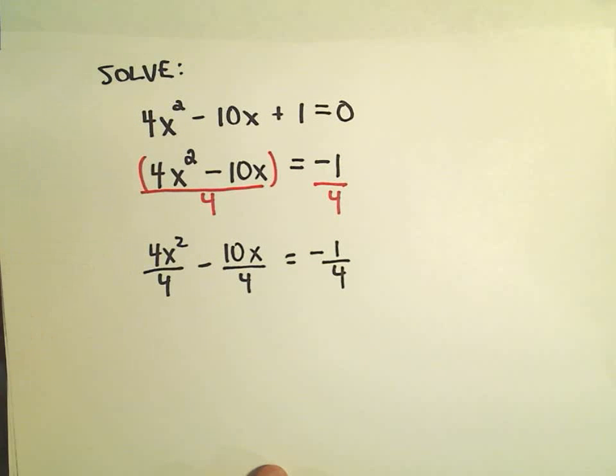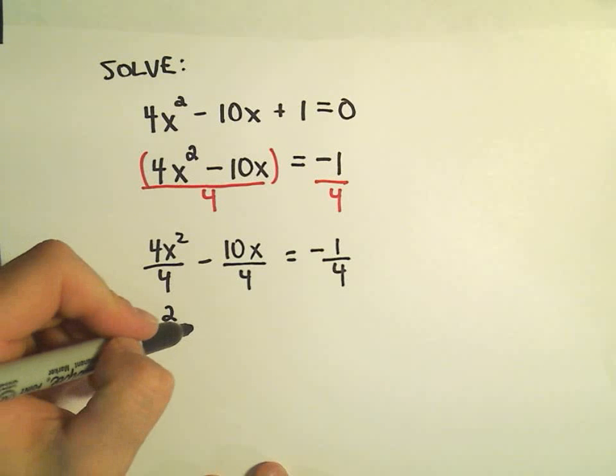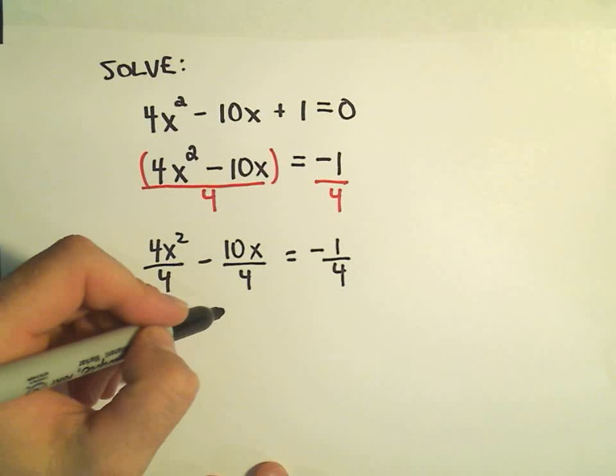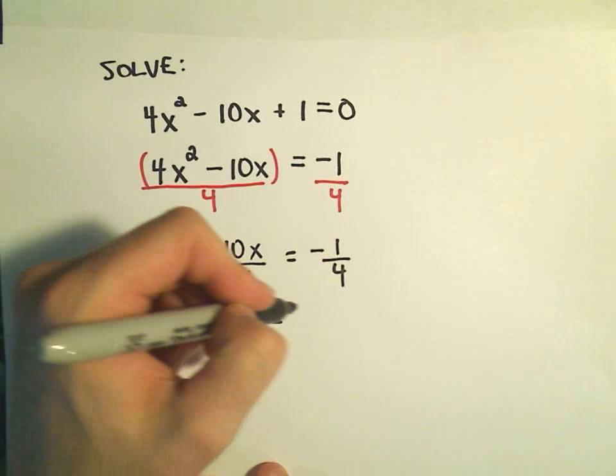Well, if I simplify 4 divided by 4, that'll give me positive 1x² and that's what I wanted. We have 10 over 4, which reduces to 5/2. I'll put the x out to the side. And then we have our -1/4.